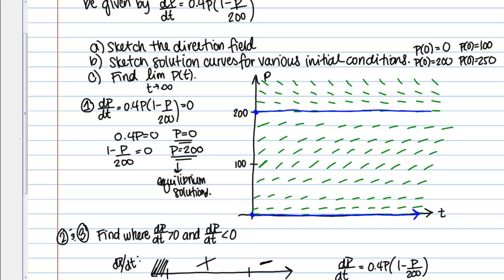For p of 0 equals 200, starting with a population of 200, I'm also along another equilibrium solution — I'm just stuck with 200 rabbits. But let's see what might happen for initial conditions that aren't along equilibrium solutions. For p of 0 equals 100, starting with 100 rabbits, I'm just going to follow the flow: it looks like I'm starting to go up, and I'm pretty steep — remember 100 is where the steepest positive slopes are — and then I'm still increasing but kind of leveling off, and it looks like I would approach this equilibrium solution at 200.